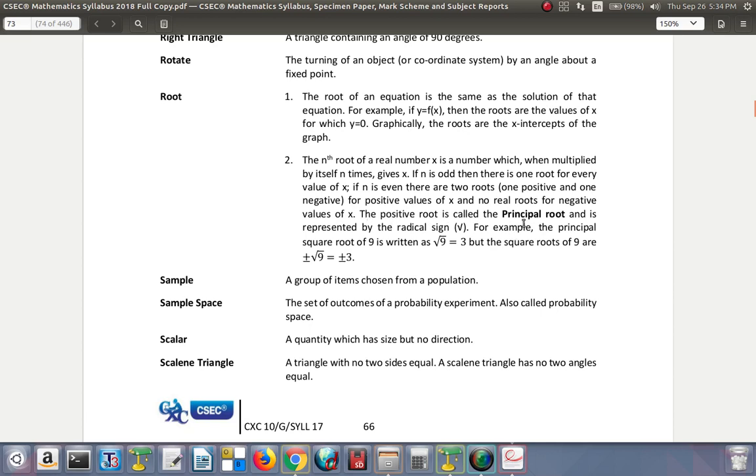The positive root is called the principal root and is represented by the radical sign. You see it here. For example, the principal square root of 9 is written as square root of 9 equals 3. But the square root of 9 is plus and minus 3. So the square root is a number that multiplies itself to give you the first number.